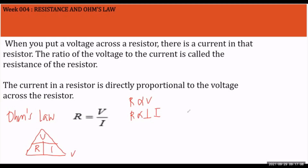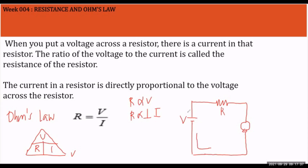You can use this as a reference so you don't forget Ohm's Law. When you put a voltage across a resistor — say you have a circuit with a bulb, a voltage V, and resistance R — current I will flow. The voltage supplies energy to the load. That current flows through the circuit and supplies voltage to the load.